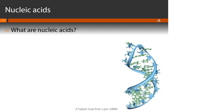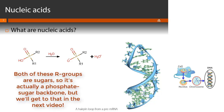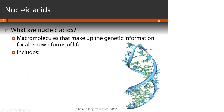Today is our first nucleic acids lecture. We're going to start by defining what a nucleic acid is. The term nucleic acid comes from 'nucleic' because these are mostly found in the nucleus, and 'acid' because the phosphate backbone is acidic. Nucleic acids are macromolecules that contain the genetic information for all known forms of life.